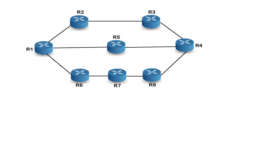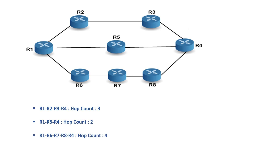In the given example, if R1 wants to communicate to R4, there are three routes to reach R4. The first route is via R2 to R3 to R4 with a hop count of three. The second route is from R5 to R4 with a hop count of two. The third route is from R6 to R7 to R8 to R4 with a hop count of four. If RIP is enabled, the best route would be with a hop count of two — that is, from R1 to R5 to R4.